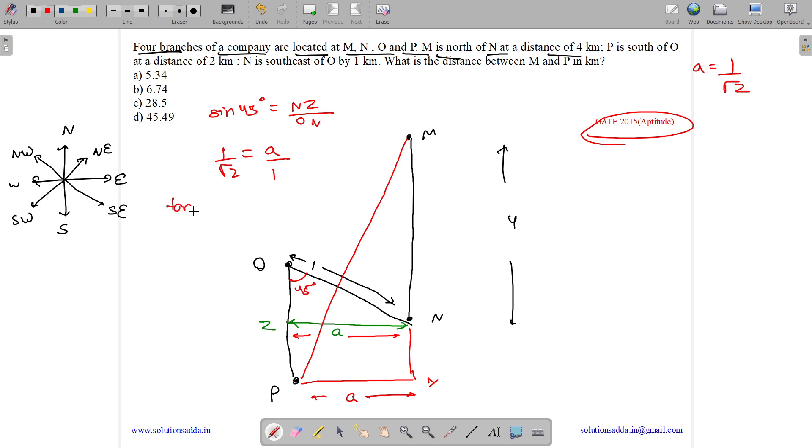Now what is tan 45 degree? Tan 45 degree equals to NZ upon OZ. Perpendicular upon base, tan 45 is 1. NZ is A, OZ is also A. We got this as A. If this is A, this is A. Then what is this? This is 2 minus A. Then NY is also 2 minus A.